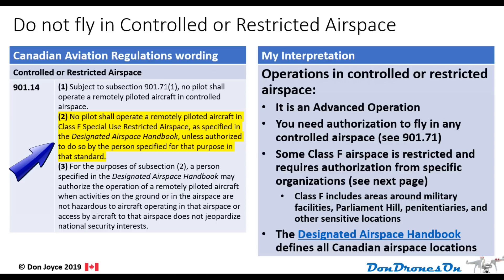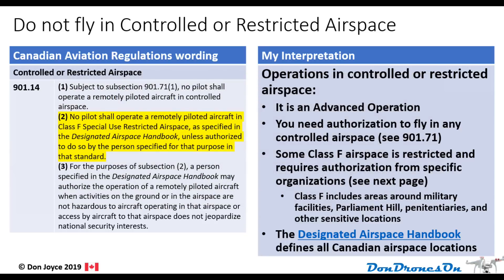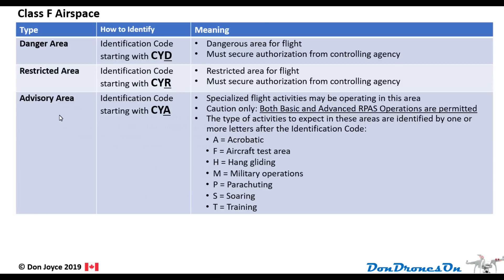You must contact the authorized person for the specific restricted area in order to fly there. These are all listed in the Designated Airspace Handbook, and in most cases the Drone Pilot Canada app will also tell you the number to call. This is an advanced operation, so you must have your advanced operations pilot certificate in order to fly in a restricted zone.